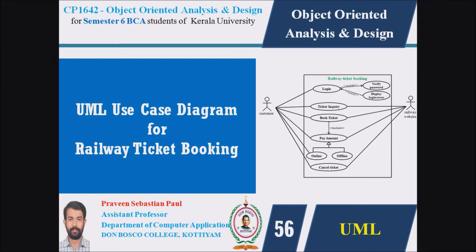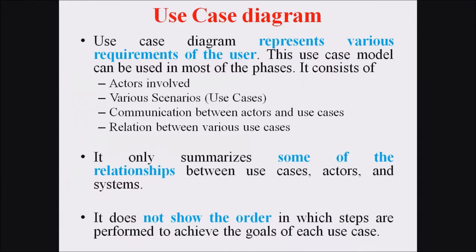In the last lecture we discussed about the use case diagram. A use case diagram represents various requirements of the user as well as the collaboration between different processors, users and associations. This use case diagram summarizes some of the relationships between the use cases, actors and the system, and it does not show the order in which each of these steps are performed.